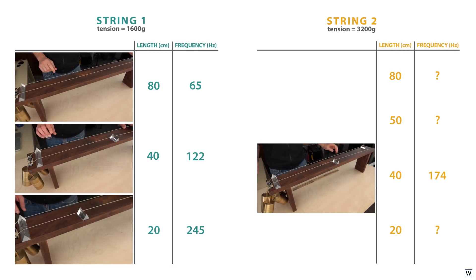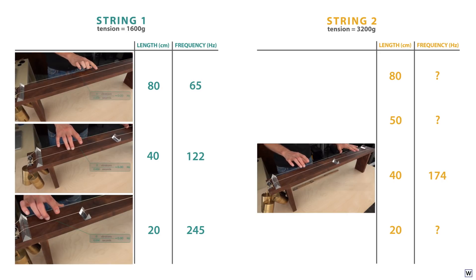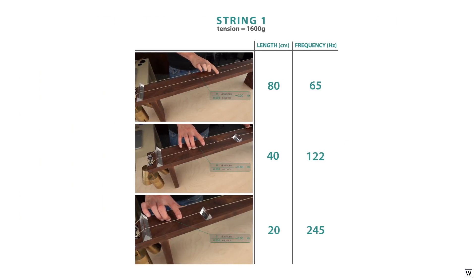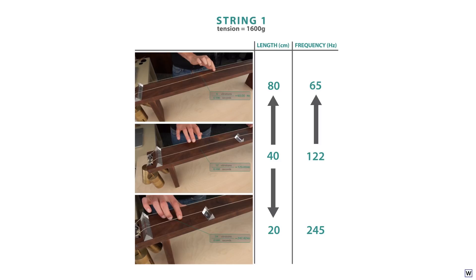Last time, we left off trying to do what Galileo did. Guess the connection between the length and frequency of a vibrating string. From the observations we made last time, it's pretty clear that as the length of our string goes up, its frequency goes down. And as the length of our string goes down, its frequency goes up.